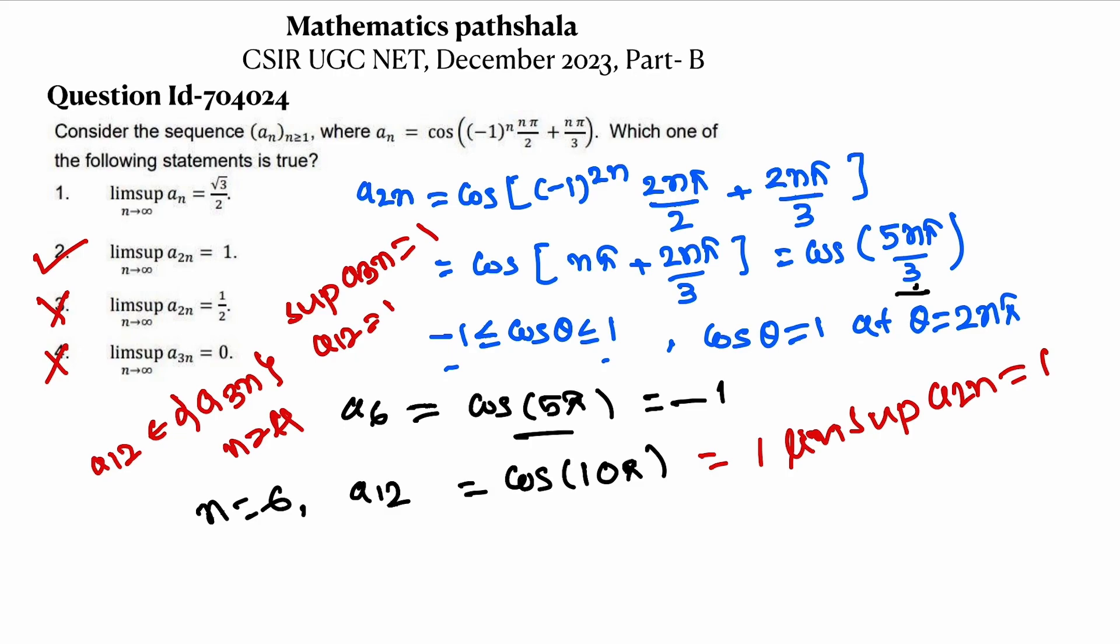Also, we know that a_2n, a_3n are subsequences of a_n. Since cos θ takes maximum value 1, so sup of a_n should be 1. What is given? Limit sup of a_n is √3/2. So option 1 is also false. So option 2 is the correct option.